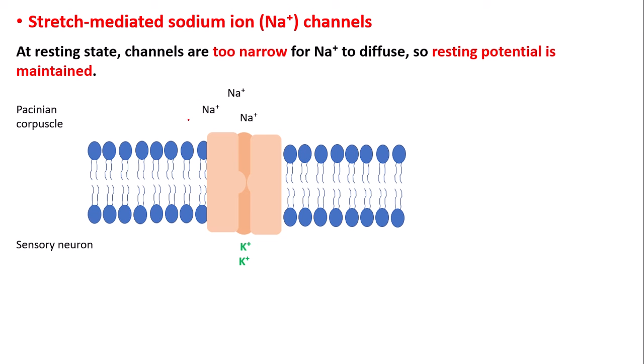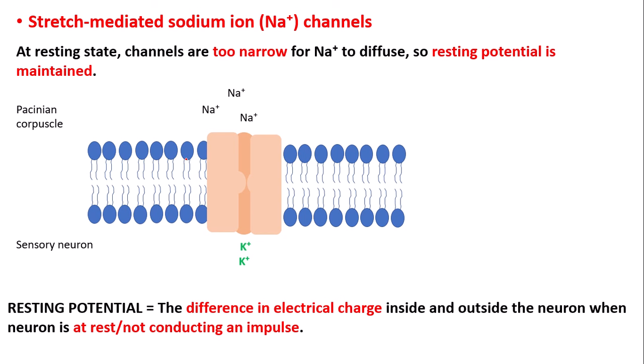Three sodium ions are pumped out into the Pacinian corpuscle but are not allowed back in, as the membrane is impermeable at resting state. The resting potential is a difference in electrical charge inside and outside the neuron when the neuron is not conducting an impulse. To summarise, the sodium-potassium pump transports three sodium ions out into the Pacinian corpuscle and two potassium ions into the sensory neuron to maintain resting potential, ensuring no unnecessary impulses are sent.